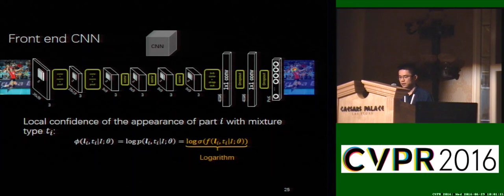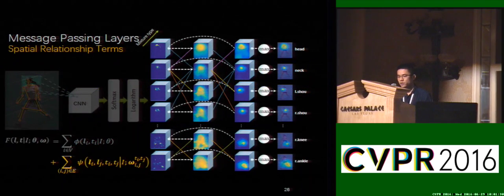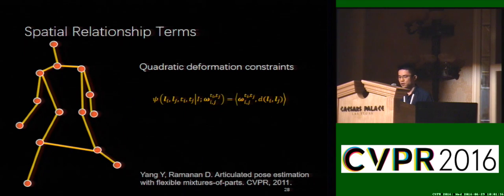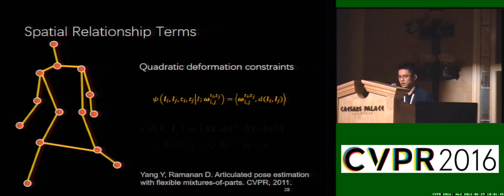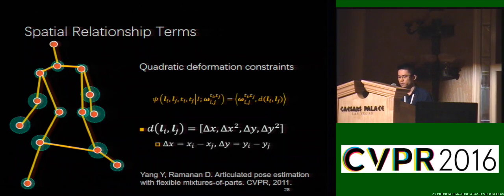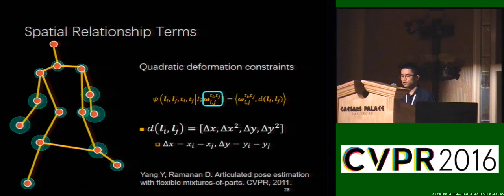Note that the front-end CNN does not take the global pose consistency into consideration, hence the score maps may not be accurate. Now we turn to the pairwise terms. The pairwise terms are modeled by the message-parsing layers. We incorporate the deformable mixture of parts model to encode the spatial relationships of pairs of parts, where d is the relative location between two parts and omega is the parameters of a spring that favors certain relative locations over others. This greatly reduces the parameter space compared to learning spatial relationships by convolutional kernels.